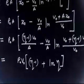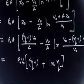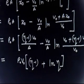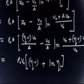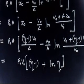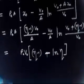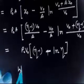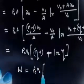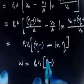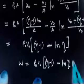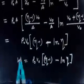So the final answer for the work performed is W = P0·V0·(eta - 1 - ln eta). This is the work one has to perform to raise the piston such that the final volume becomes eta times the initial volume.